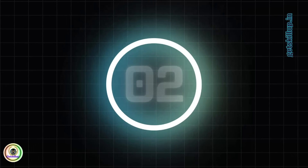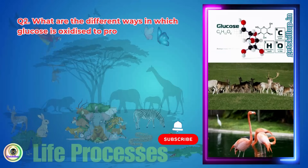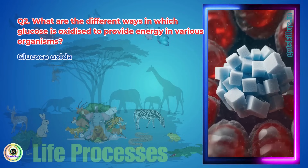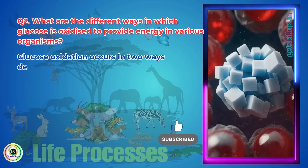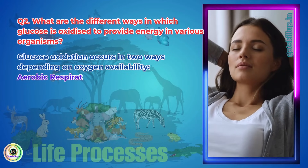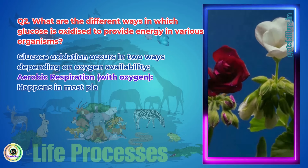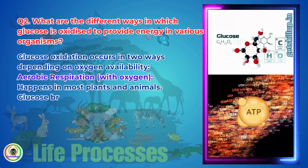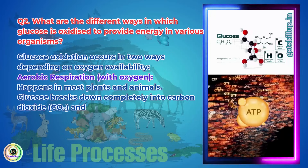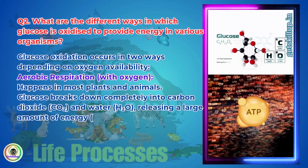Question 2: What are the different ways in which glucose is oxidized to provide energy in various organisms? Glucose oxidation occurs in two ways, depending on oxygen availability. Aerobic respiration, with oxygen, happens in most plants and animals. Glucose breaks down completely into carbon dioxide (CO2) and water (H2O), releasing a large amount of energy as ATP.